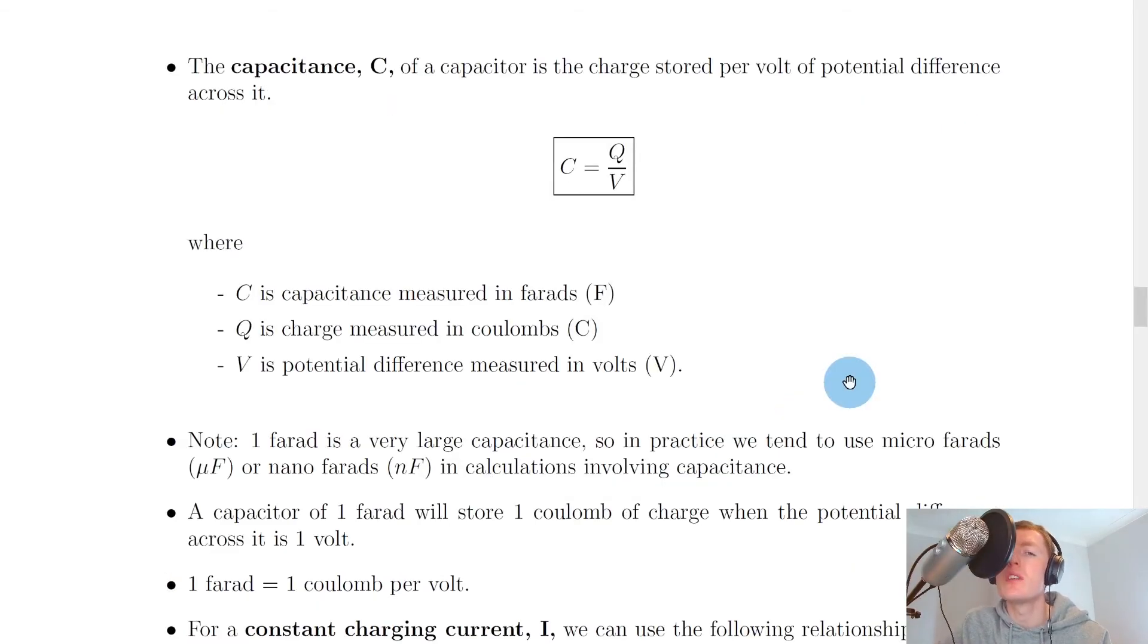So from this expression q equals cv, we have the definition for capacitance. And we say the capacitance c of a capacitor is the charge stored per volt of potential difference across it. So charge stored per volt is the same as q over v. So we have that c equals q over v, where c is the capacitance measured in farads with a capital F, q is charge measured in coulombs with a capital C, and v is potential difference measured in volts with a capital V.